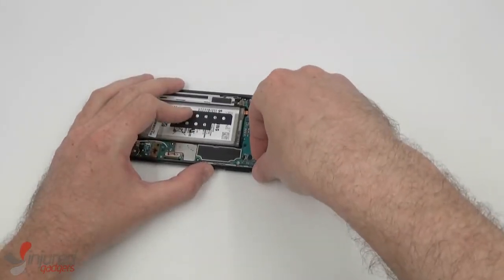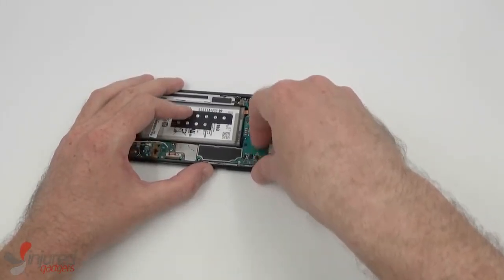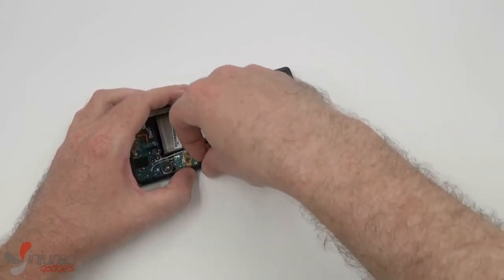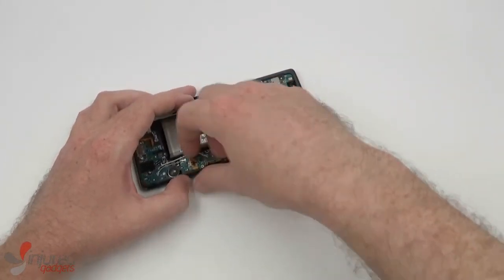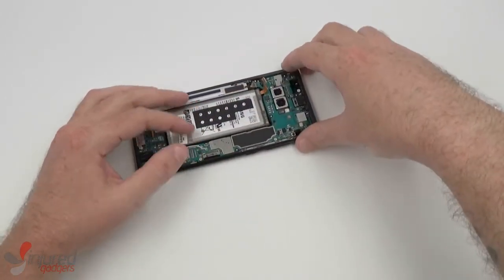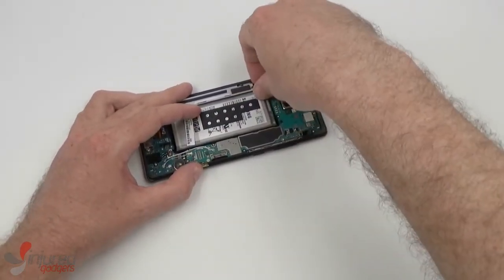Now we will disconnect the proximity and flash flex cable, then the LCD flex cables here before disconnecting the S-Pen flex cable.